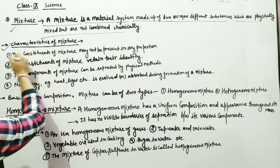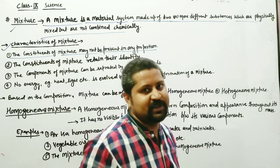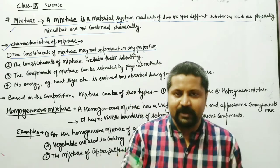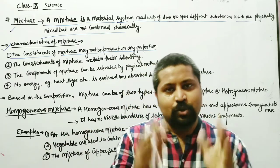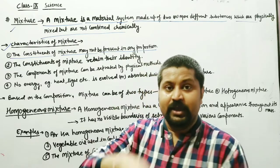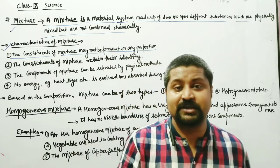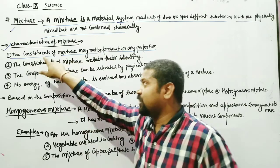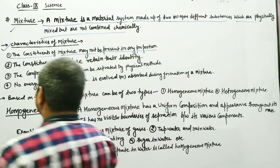Now let's look at the characteristics of the mixture. First: the constituents of a mixture may not be present in any fixed proportion. In a compound, elements are mixed in a definite proportion, but in a mixture the proportion is not definite. A compound can be a mixture, but a mixture cannot be a compound.